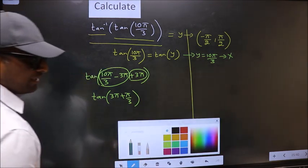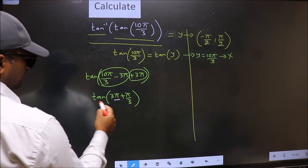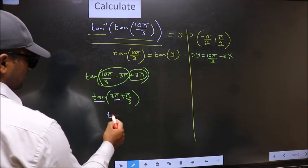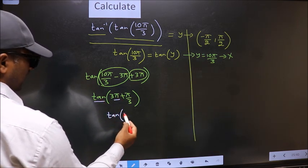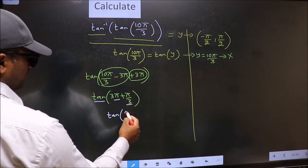Okay. Next, here we have π, so tan is not going to change. It will remain tan, and inside we get this angle π/3.